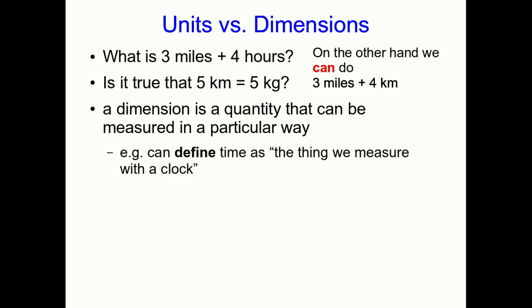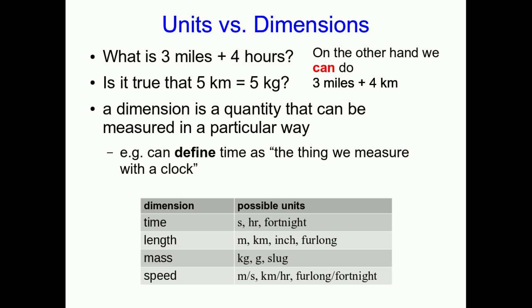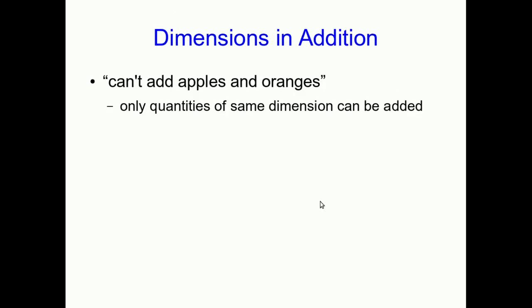A dimension is just a quantity that can be measured in a particular way. To clarify that, for example, time you can define as a thing you measure with a clock. Now, you could express it with seconds or hours or fortnights or whatever you want. But what it comes down to is that no matter which units you use to express it, you will have measured it with a clock. And that's how you know that it's a time.